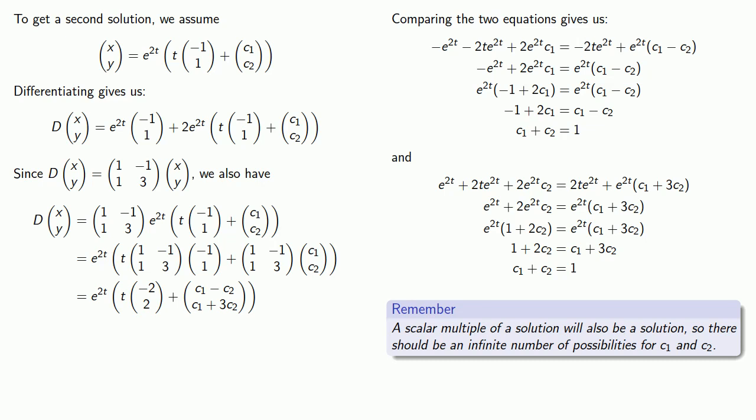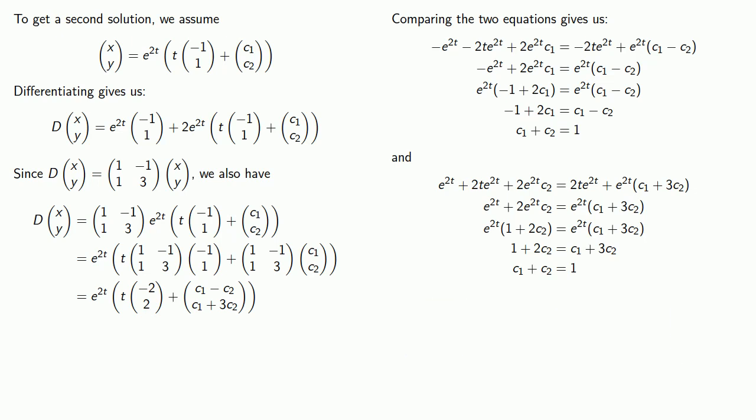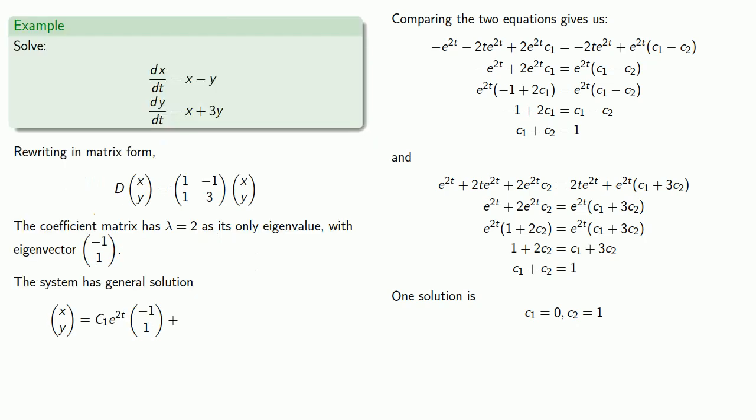In fact, you can think about this as an important check on your work. If you've done everything correctly, there should be an infinite number of values for this constant vector. And so any value of c1 and c2 that works will work for our constant vector. So let's make c1 equal to 0, in which case c2 will be equal to 1.